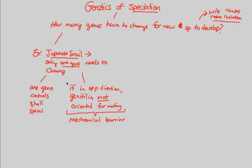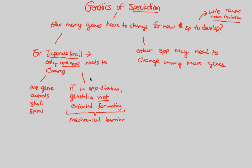This is a very extreme example of how many genes need to change — just one. In most cases and in other species, you may need to change many more genes. This was a contrived example to drive home the point that it's only a matter of whatever causes reproductive isolation, and here only one gene was necessary for that. In other species, you may have many more genes needed to cause reproductive isolation.